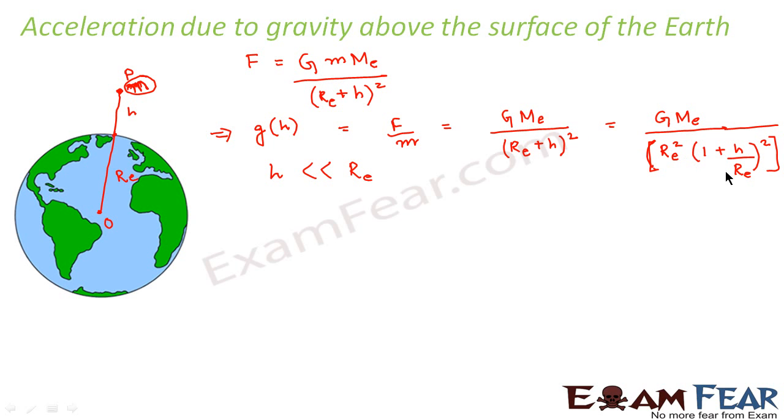Therefore we can apply binomial theorem. How do we apply binomial theorem? We can write the above expression as G M_e divided by r_e square. This you leave as it is. So this into 1 plus h by r_e to the power minus 2, because I took it to the numerator. Now since h is very very less than r_e, that means this entire term will be very very less than 1. That means it will be a very small term.